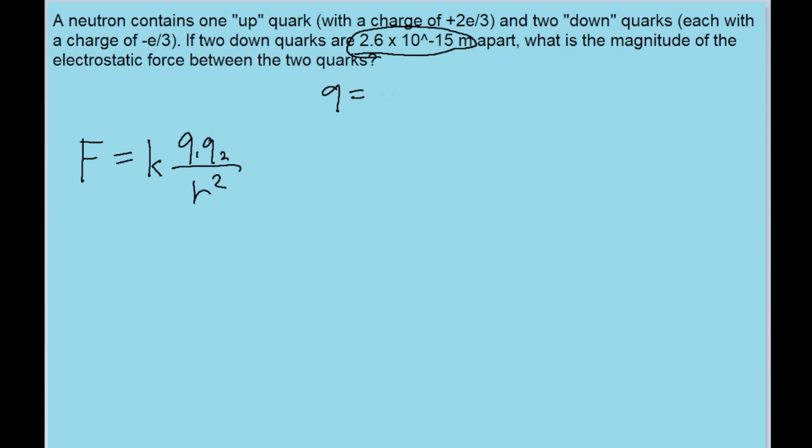And the charge of one down quark is given as negative e over 3, where e is the elementary charge, and is equal to 1.60 times 10 to the negative 19 Coulombs.